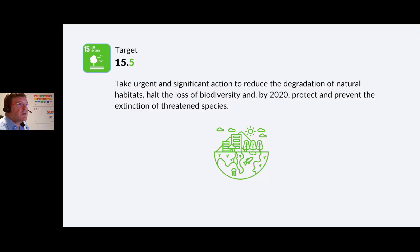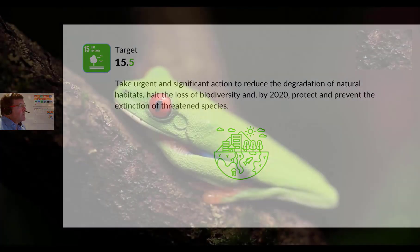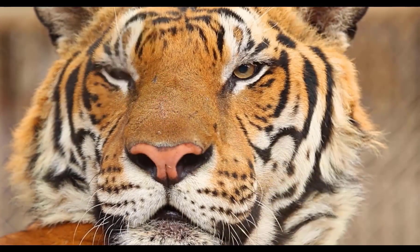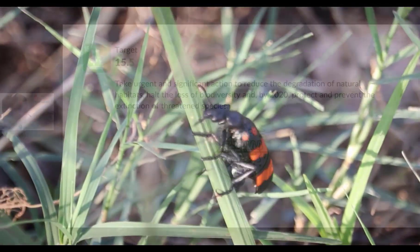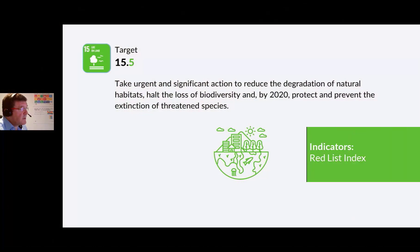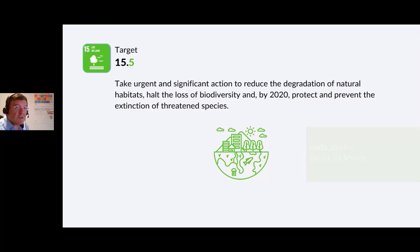Target 15.5: Take urgent and significant action to reduce the degradation of natural habitats, halt the loss of biodiversity, and by 2020, protect and prevent the extinction of threatened species. The IUCN Red List has evaluated 40,084 species across all taxonomic groups to be threatened with extinction in 2021. The indicator for this target is the Red List Index.